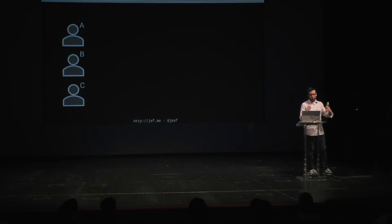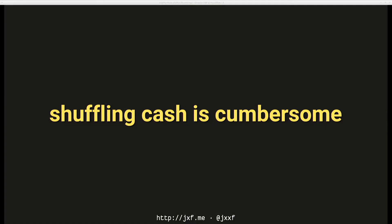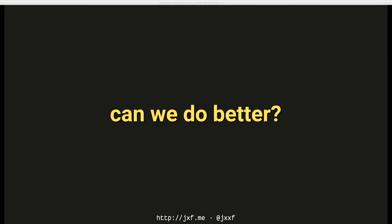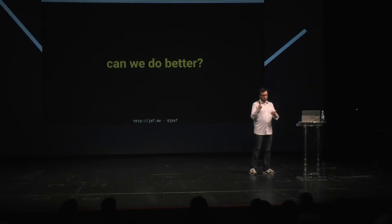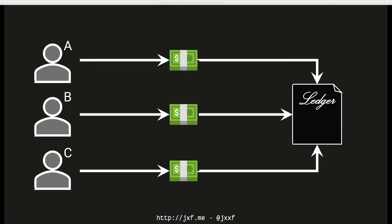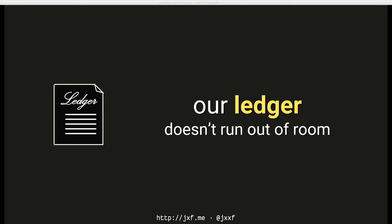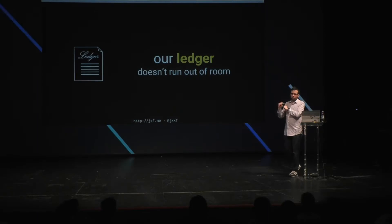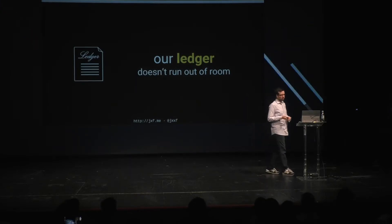Alice, Bob, and Carol are roommates who buy each other beer and swap utilities and rent, handing over cash every once in a while. To do better, we ask each of them to contribute roughly what they'd spend in a week — say $100 each — into a shared pot. That $300 is the basis of our ledger, which records transactions and never runs out of room. We'll have a whiteboard on the refrigerator, and if we run out of room, we just staple more whiteboards to the bottom.